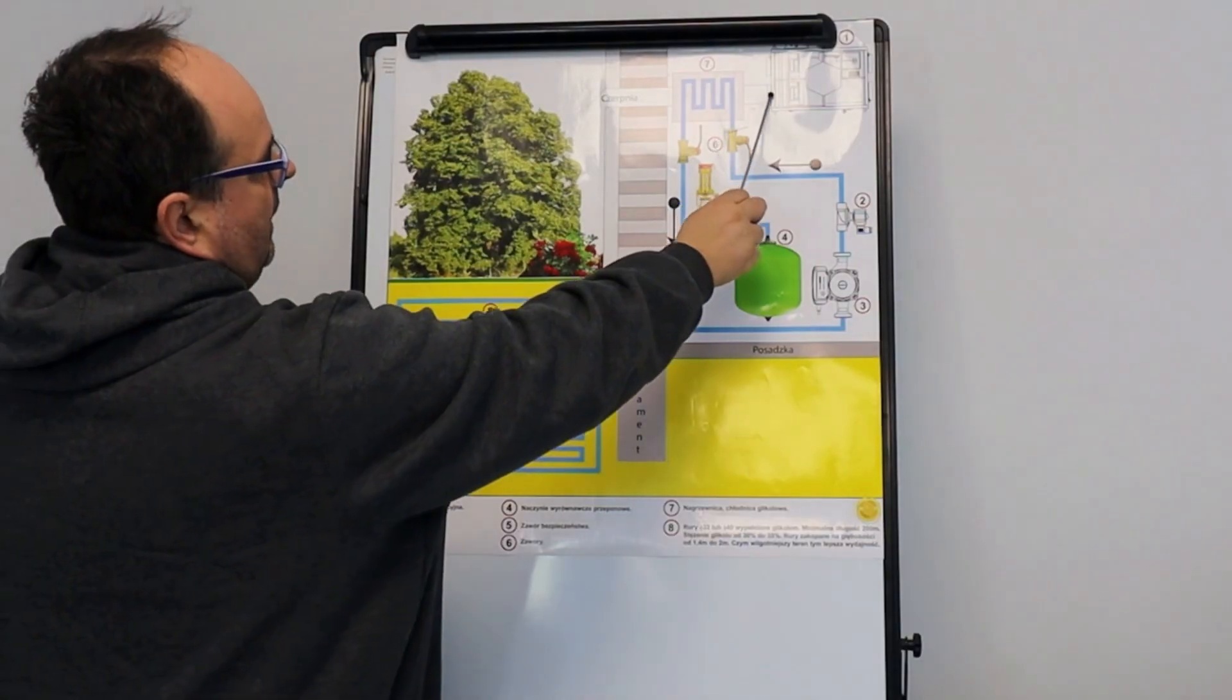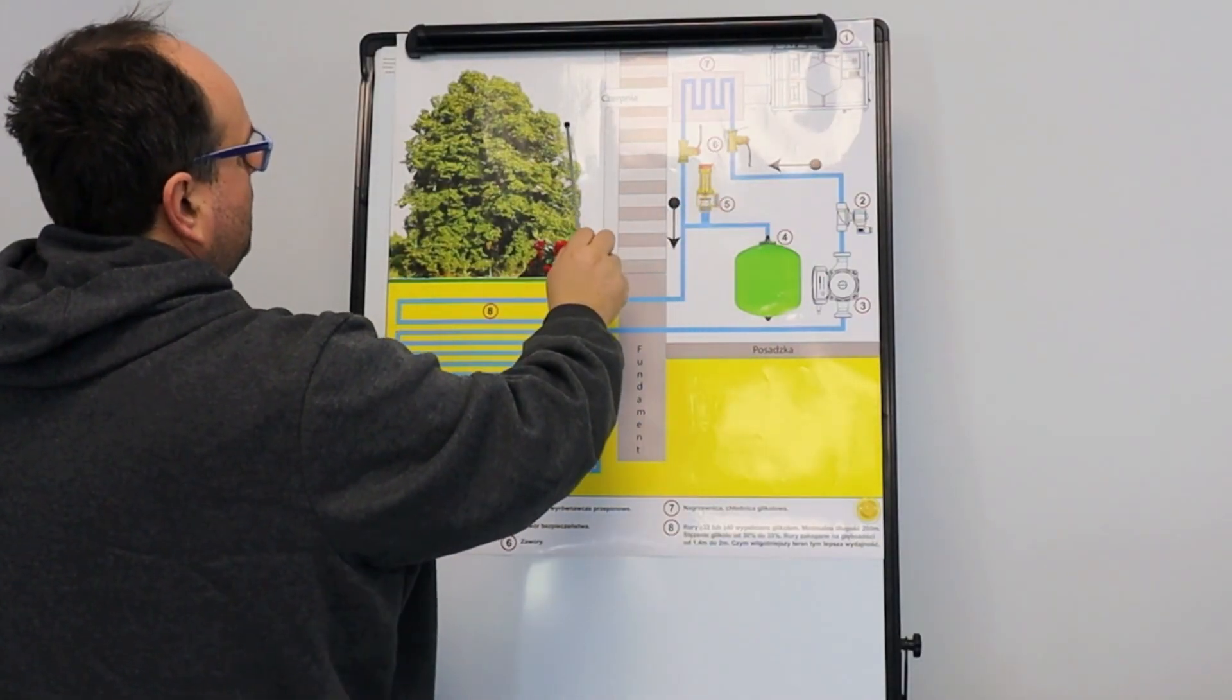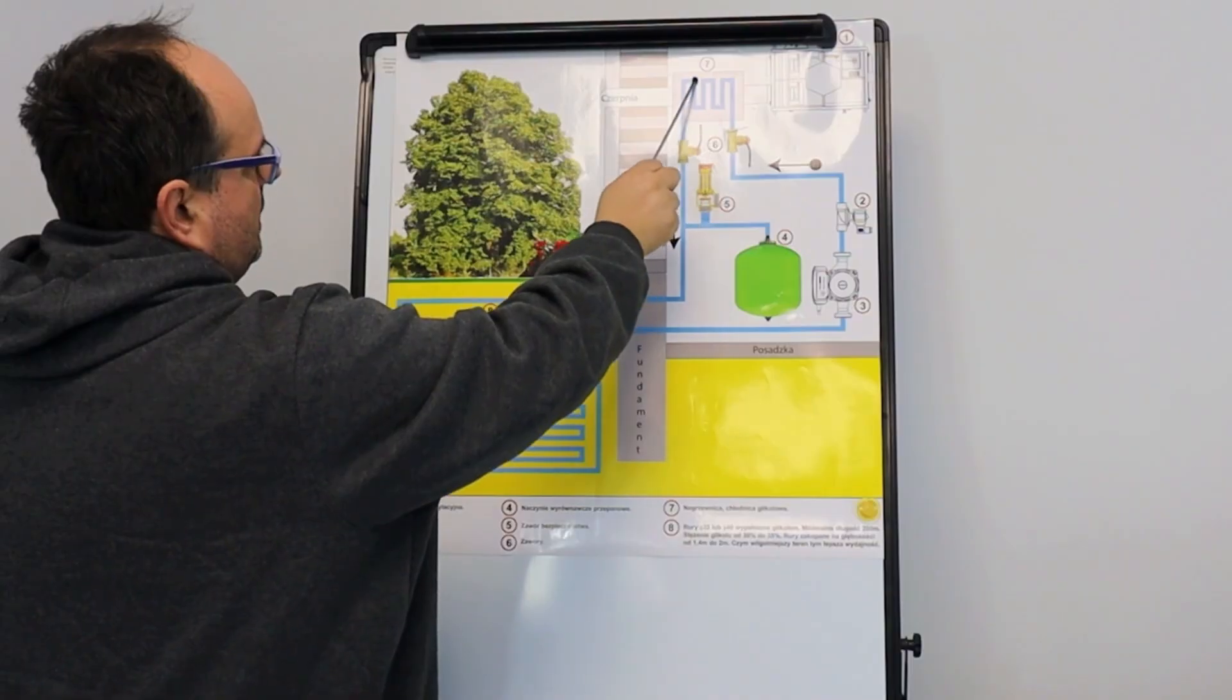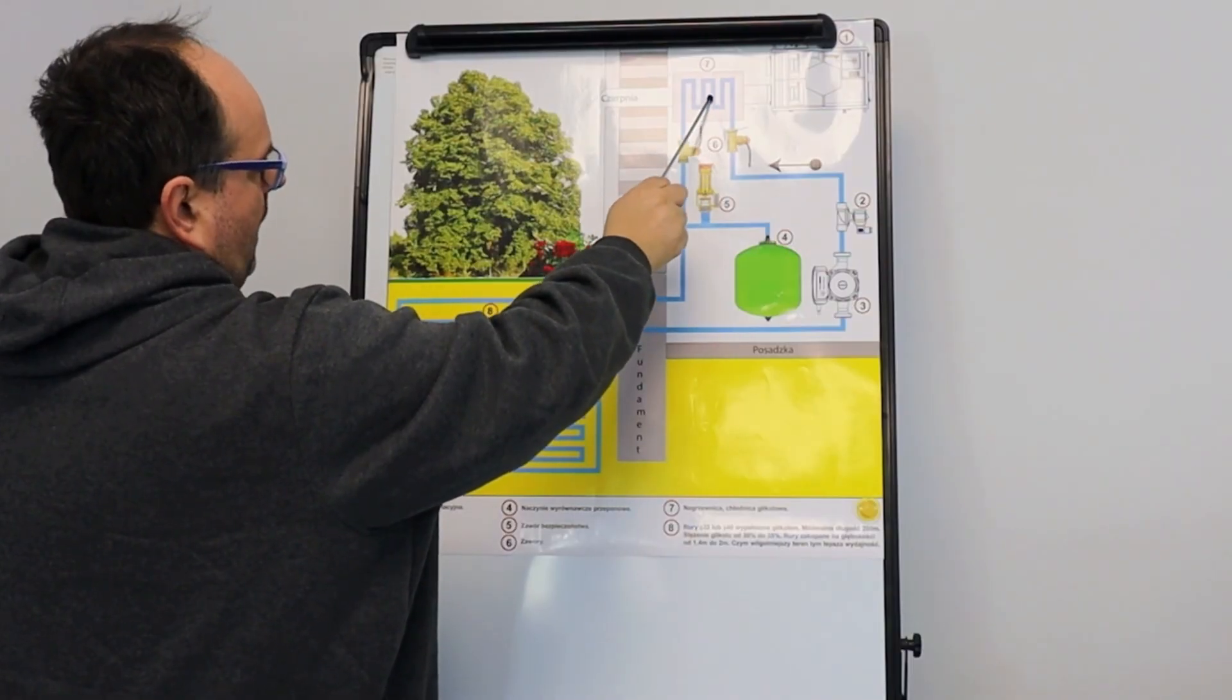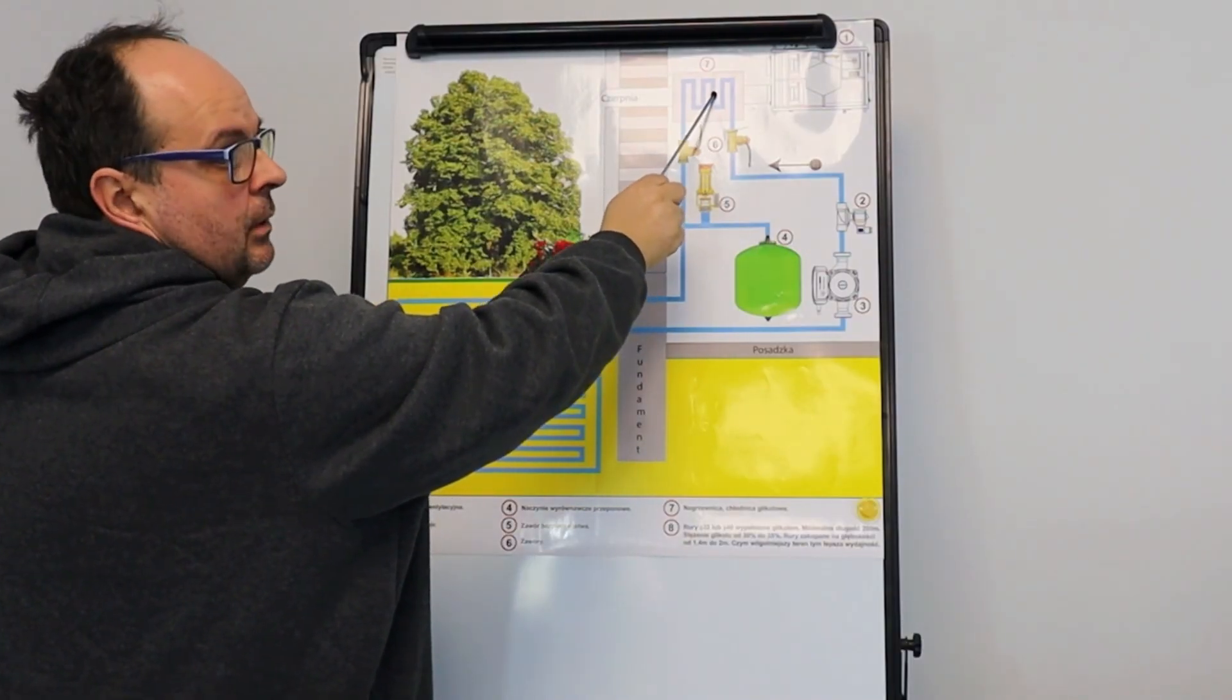There's nothing more. On the air handling unit, we have the air intake. The air goes through the intake, through our glycol cooler, and reaches the air handling unit.